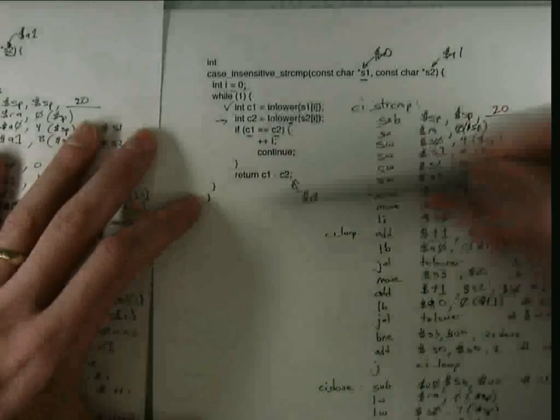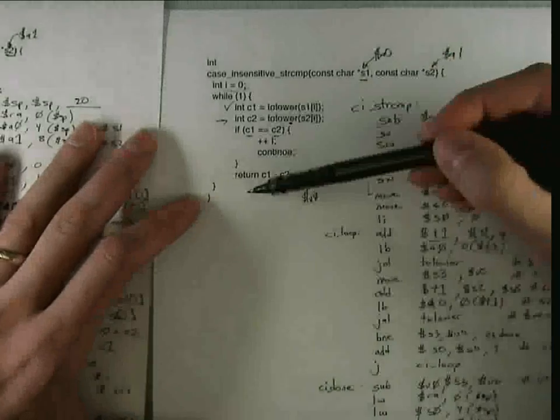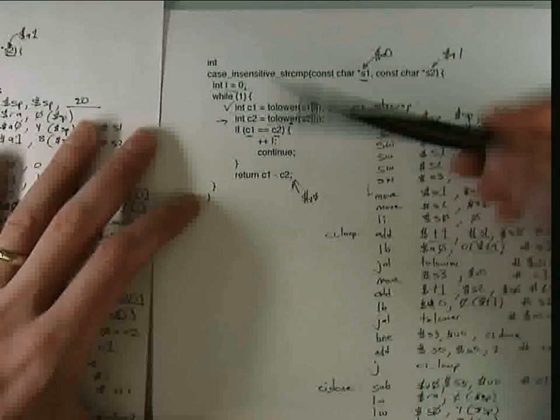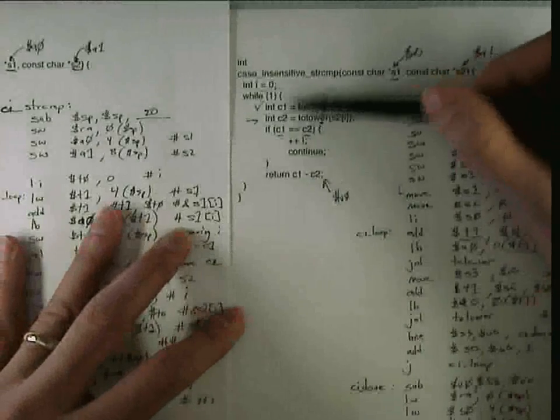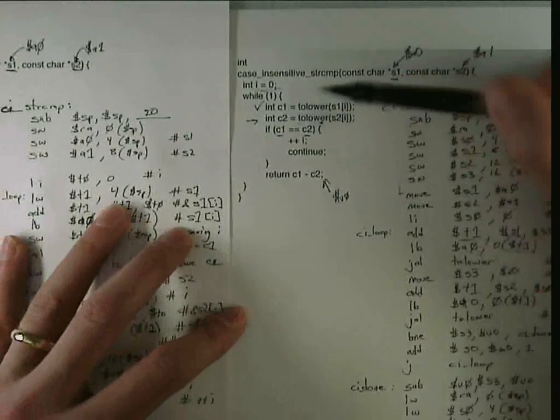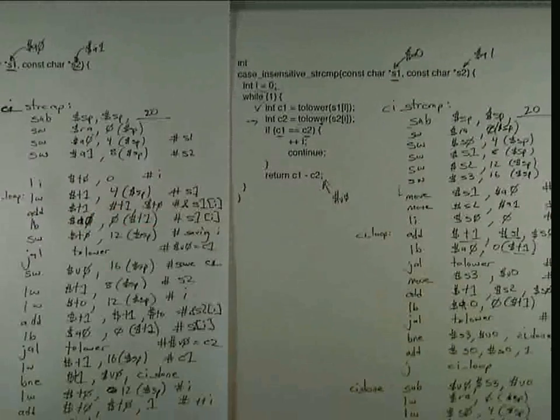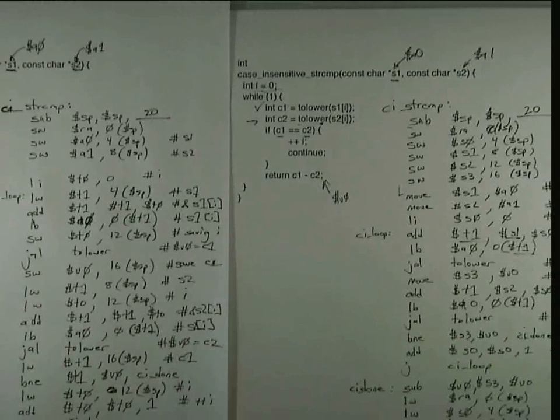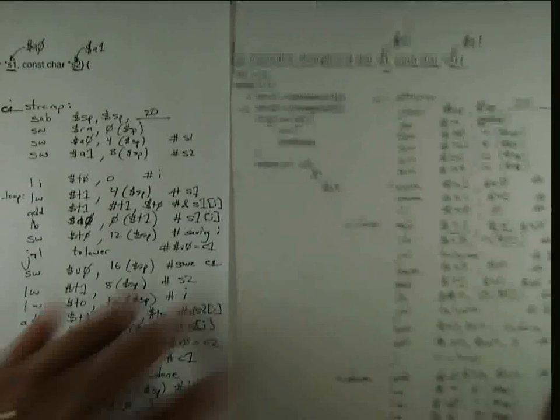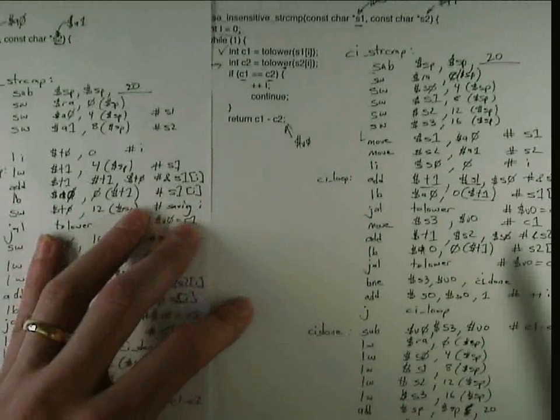If your function doesn't have a loop, then it might actually be simpler to use the caller saved registers because many of the register values might not actually be live after the call. And so you don't actually need to save them to the stack. So that demonstrates why we might be interested in using callee saved registers.